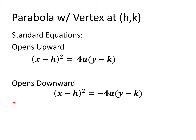When the parabola opens upward and the vertex is at (h,k), the standard equation is (x − h)² = 4a(y − k). Notice that h is paired with x and k is paired with y in our equation — we will clarify what h and k are shortly. For the parabola that opens downward, the standard equation is (x − h)² = −4a(y − k). Because it opens downward, 4a is now negative.